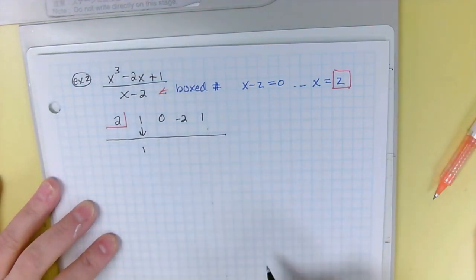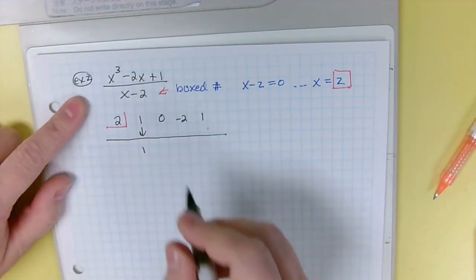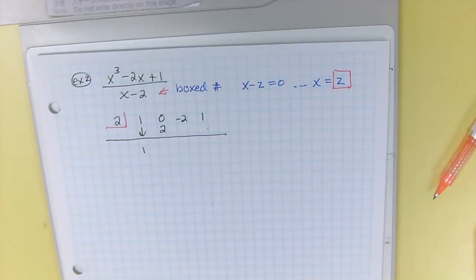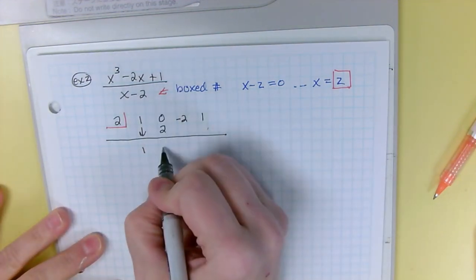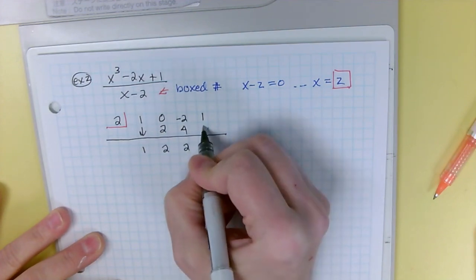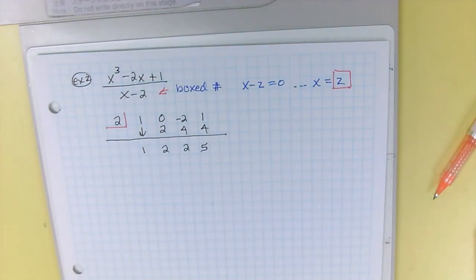All right, so bring down the one, multiply by the two, one times two is two, put it under the next number. Okay, go ahead and finish. Finish doing the division. When you're done, look up and check your division.